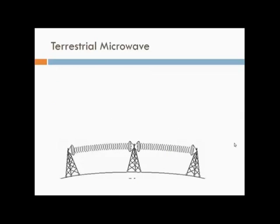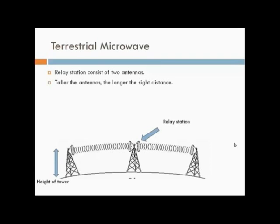In terrestrial microwave systems, relay stations consist of two antennas, each focused on a distant antenna in a different direction. The taller the antenna, the longer the sight distance. Height allows signals to travel farther without being blocked by Earth's curvature and raises the signal above surface obstacles.